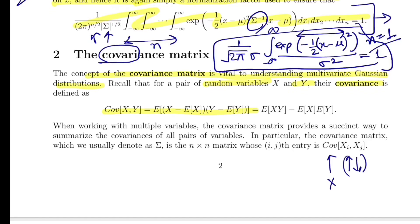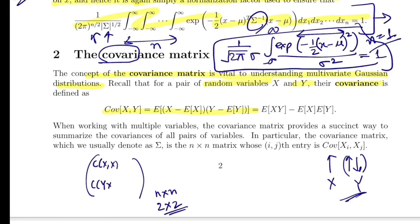If you change one variable, covariance tells you how the second variable behaves — whether it increases or decreases. The covariance matrix is an n×n matrix. For n=2, it's a 2×2 matrix with entries: cov(x,x), cov(y,x), cov(x,y), and cov(y,y). Let's substitute these values into the formula and see what we get.